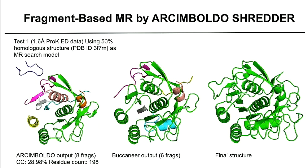The second test used the same 1.6 angstrom proteinase K electron diffraction data set, but with a 50 percent homologous structure — a cuticle-degrading protease — as the search probe. The output showed eight fragments finding roughly the same number of residues. Upon implementing Buccaneer, it was able to add a blue helix, a gray strand, and a loop connecting the helix to the strand, after which we just connected the remaining fragments and performed loop modeling to obtain the final structure.